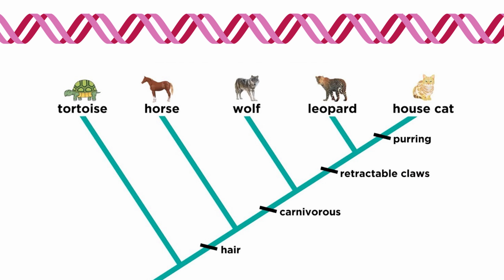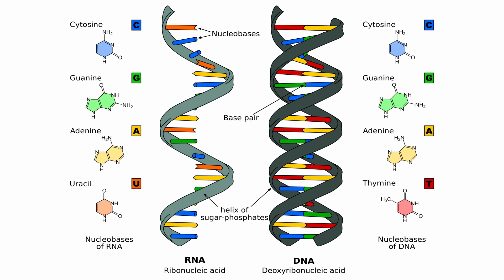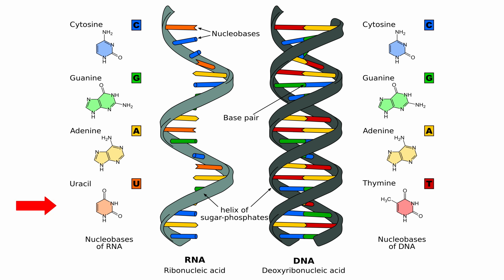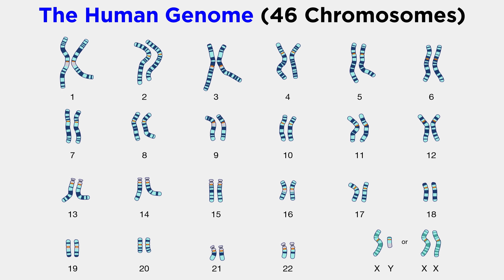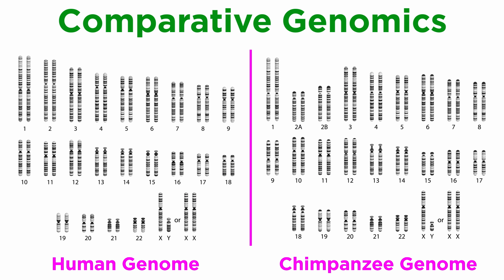Thanks to Mendel and others, we learned that due to the heritability patterns of genes, we can use genetics to determine how closely related things are to one another. Our cells contain DNA and RNA that utilize the bases cytosine, guanine, adenine, and thymine in DNA, or uracil in RNA. The complete set of genes within an organism, like us, is known as the genome, and the more similar two whole genomes are, the more closely related the individuals are.